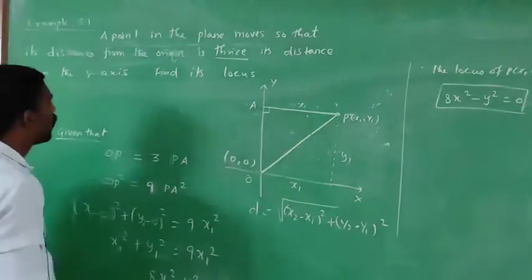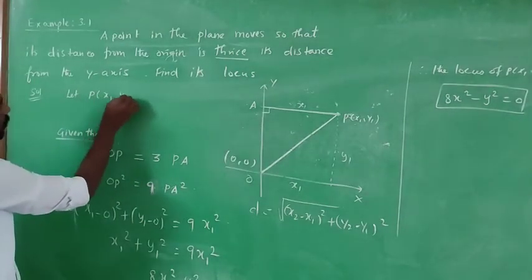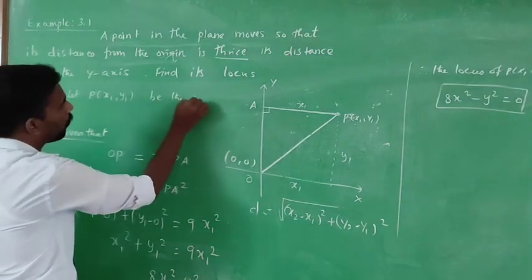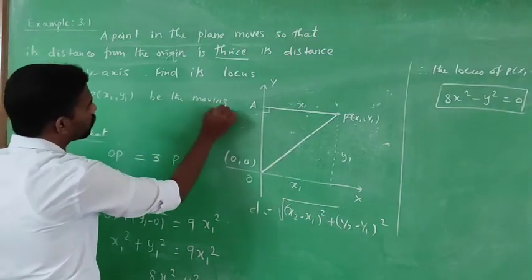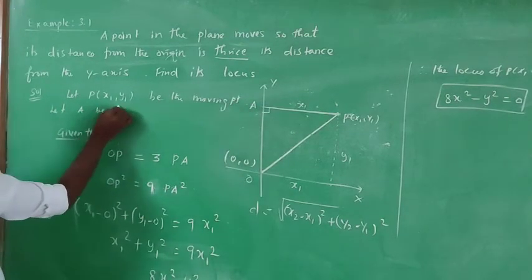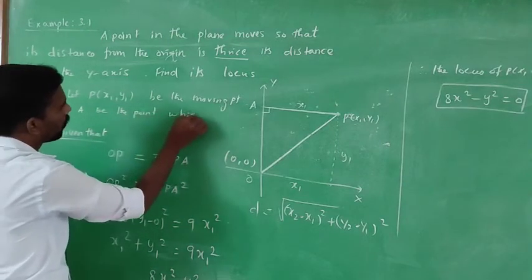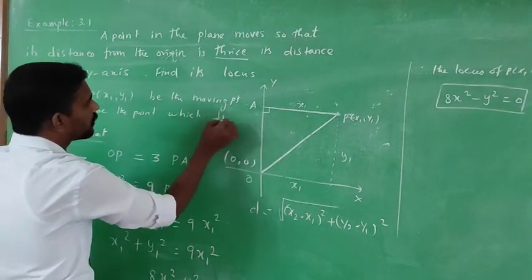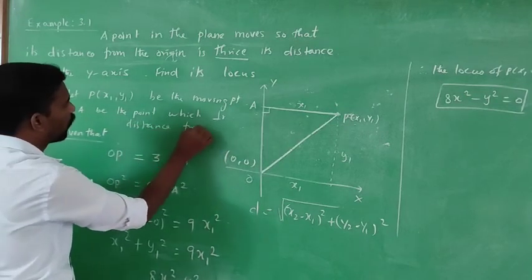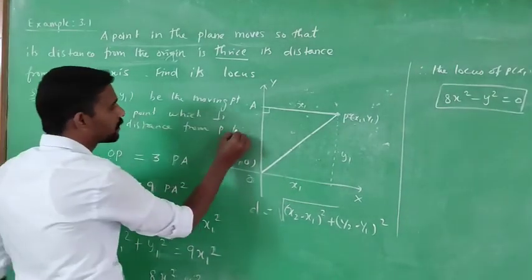Let P(x1, y1) be the moving point. Let A be the point which is the perpendicular distance from P to the y-axis.